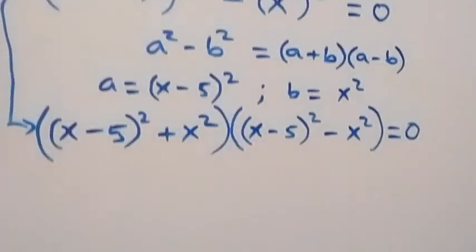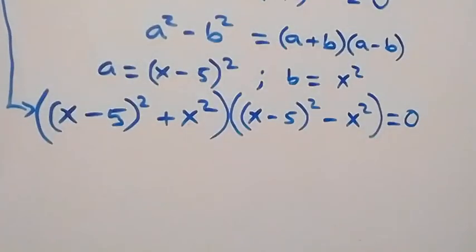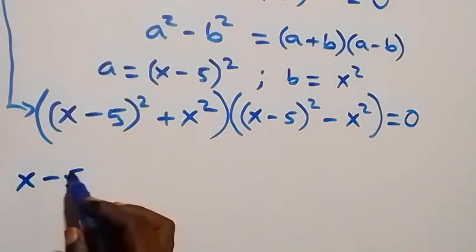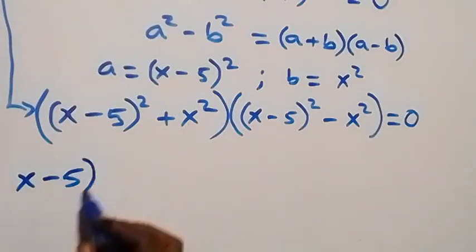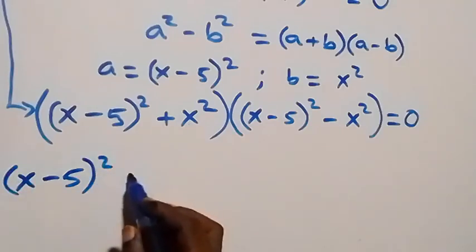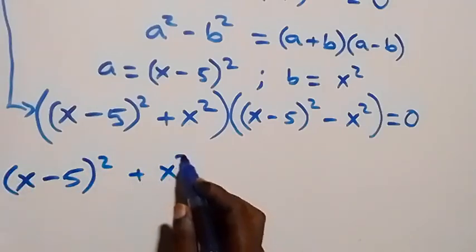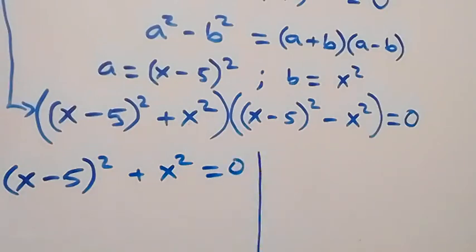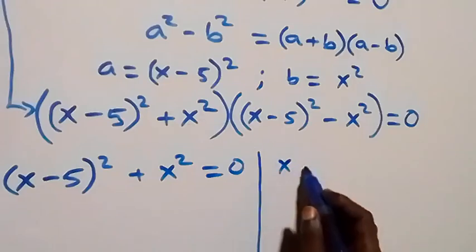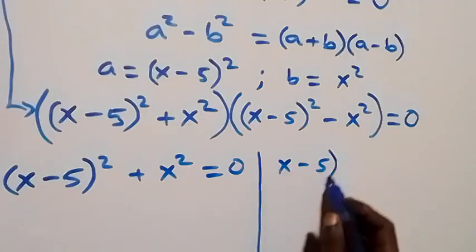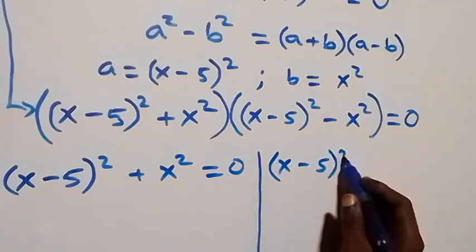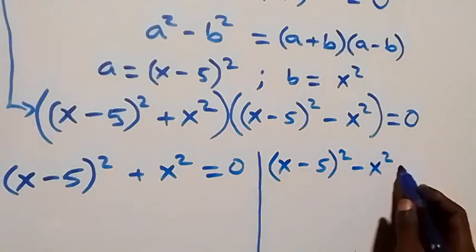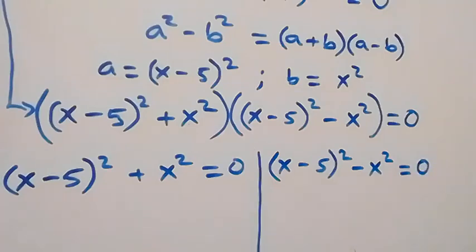From here we solve this, and we have two cases. The first one: (x minus 5) squared plus x squared equals to 0. And the second one: (x minus 5) squared minus x squared equals to 0.